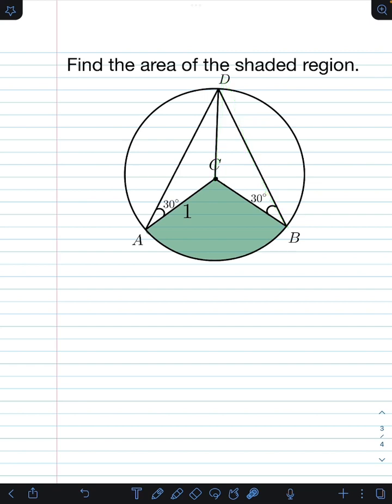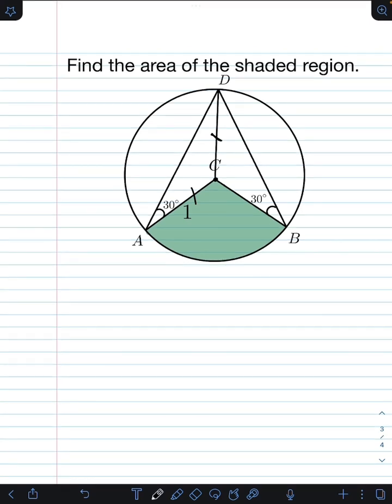They are both isosceles triangles because for triangle ADC, the sides DC and CA are congruent because they are both radius of the circle. Likewise, in triangle DBC, side DC is also equal to side CB. They are both radius of the circle.